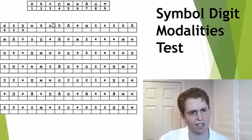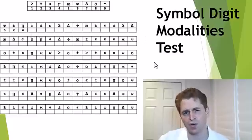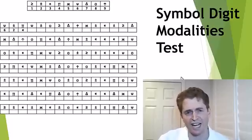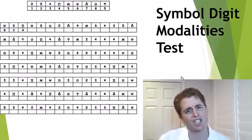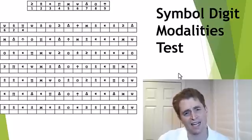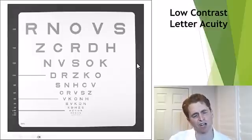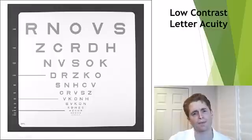The Symbol Digit Modalities Test measures cognitive function — you memorize symbols and corresponding numbers, then fill in as many answers as you can in 90 seconds. I think the PASAT (Paced Auditory Serial Addition Test) may be technically better, but it's extremely difficult and frustrating and takes more time to perform, so the SDMT may be a more practical choice. Low-contrast letter acuity — an eye chart with soft gray letters — is very sensitive at picking up visual loss due to optic neuritis. The last component is the timed 25-foot walk test, simply how long it takes you to walk 25 feet.